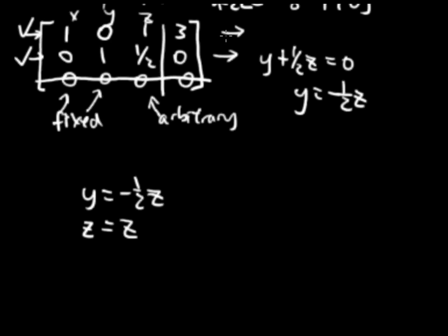And then we read this equation, which says x plus z equals 3. We want to solve for x. So you just move the z over to the other side. So x equals 3 minus z.